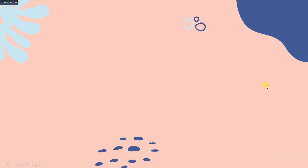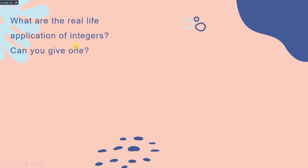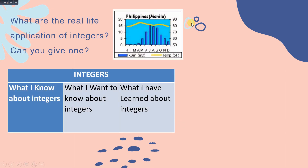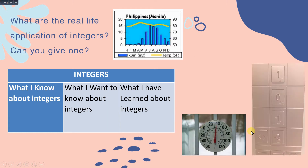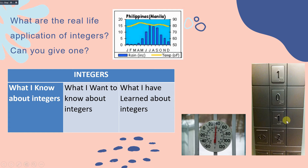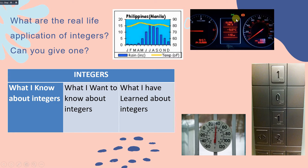What are other real-life applications of integers? We use integers for weather forecasts to identify the temperature of the day. We also use them for elevator floors, where negative 1 and negative 2 represent basement levels, and positive numbers represent upper floors. Other applications include speed limits and temperature readings.